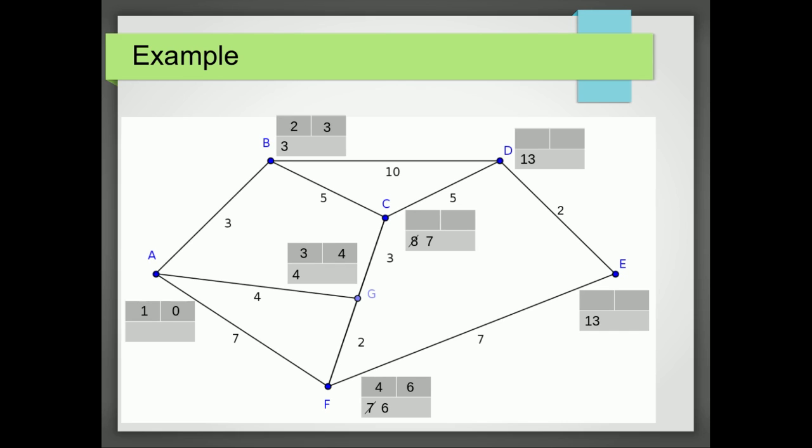The smallest value now is the 7 at C. So that's going to become a final value. It's the fifth place to label. Where can we get to from C? Well, the only place we're going to is D. We've got 7 already to get to C. We've got another 5, which makes it 12. That's better than 13. So we're going to cross out the 13 and replace it with 12.